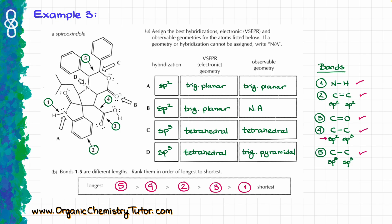It does take a little bit of practice to juggle all of those factors, but once you practice for a bit it becomes fairly easy. Remember: bond order and atomic sizes are the two most important things. Hybridization and resonance can modify the bond length — making it a little longer or shorter — but not as much as the atomic sizes and bond order, meaning single, double, and triple bonds.